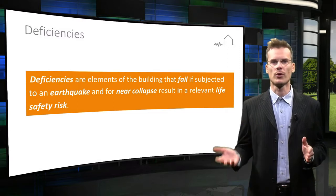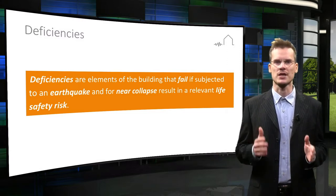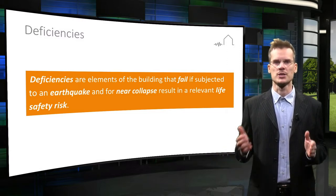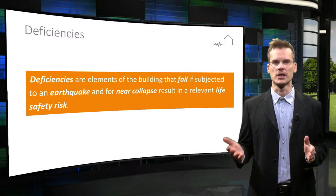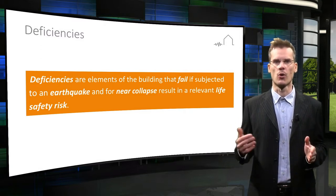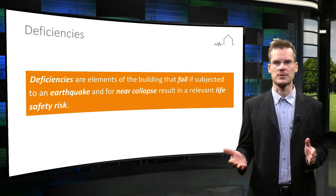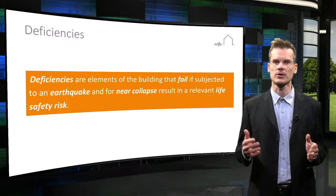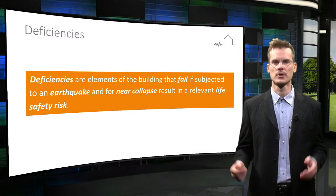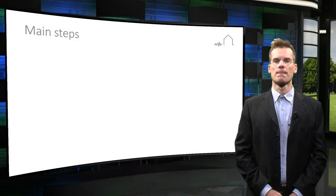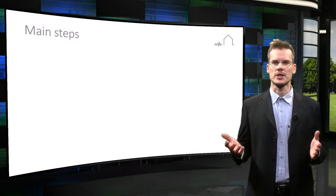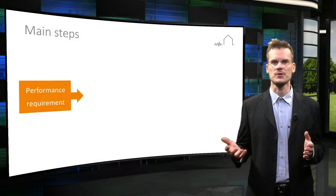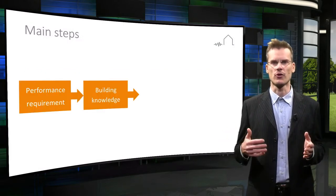Failures that do not pose a life safety threat for people, such as elements falling in inaccessible areas or local collapses of inaccessible spaces, are for near collapse not classified as deficiencies.